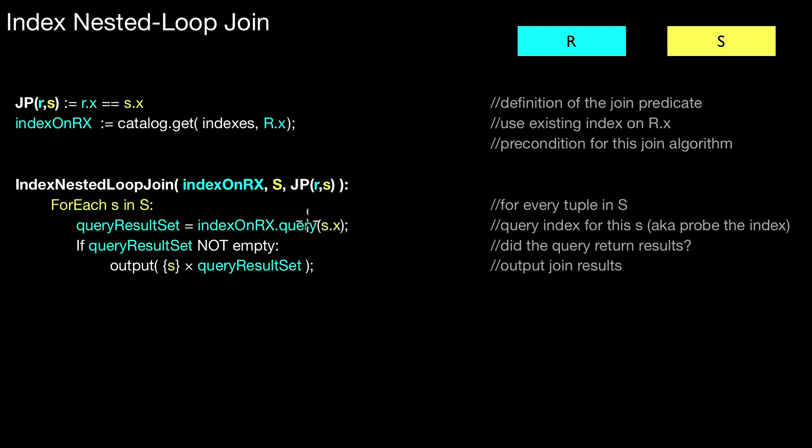And that's basically the cross product of tuple S I'm currently checking with the query result set. So here, the index will return all tuples that have that value, all tuples of R that have this same value, say 42. So this may be a set. And then what I return is simply the cross product of this set and S.